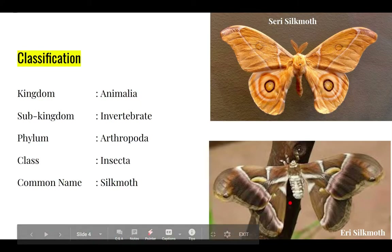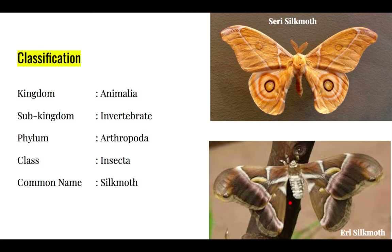Classification: Its kingdom is Animalia. Phylum is Arthropoda because it has jointed legs. Class is Insecta, and the common name is silk moth.